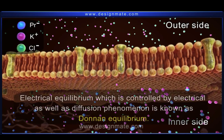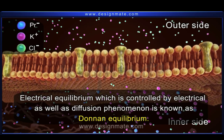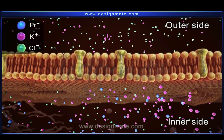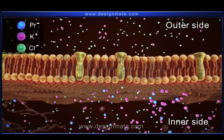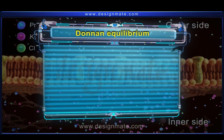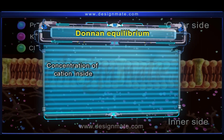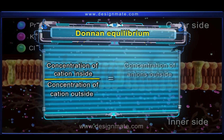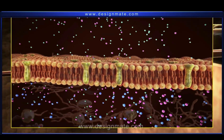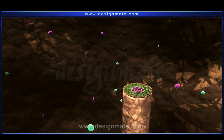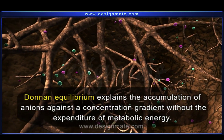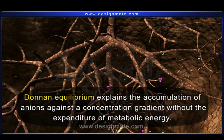This electrical equilibrium, which is controlled by electrical as well as diffusion phenomenon, is known as Donnan equilibrium. The Donnan equilibrium results in the accumulation of an ion in much greater concentration within the cell — almost 30 times — than that in the external solution. The equation for Donnan equilibrium states that the concentration of cation inside to concentration of cation outside equals the concentration of anions outside to concentration of anions inside. Donnan equilibrium explains the passive absorption of mineral ions from the soil into the root cells, and the accumulation of anions against a concentration gradient without the expenditure of metabolic energy.